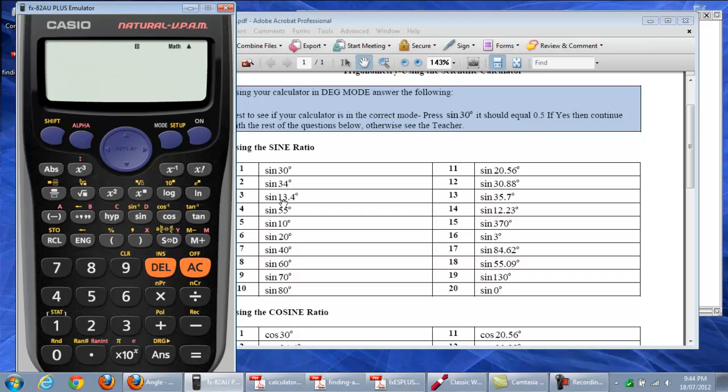So, if we wanted to do sine 13.4. So, you go sine 13.4, close the brackets, equal. So, that's the answer, 0.2317.